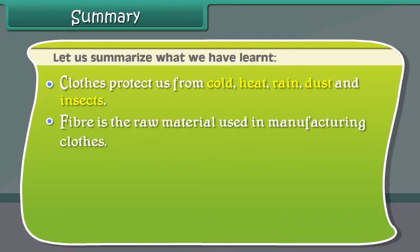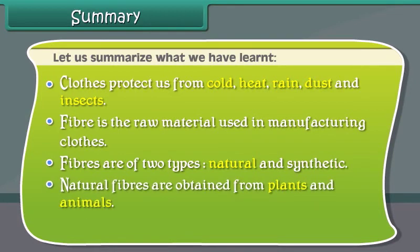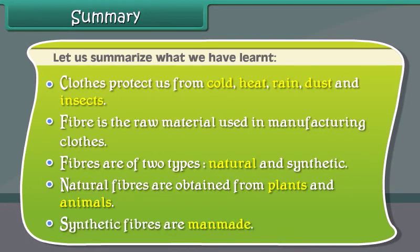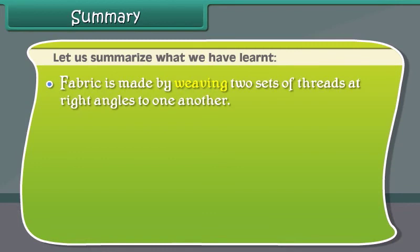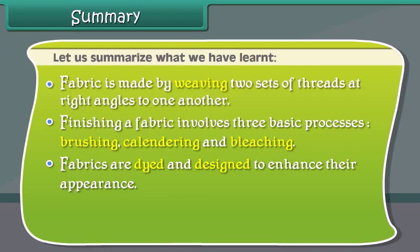To summarize: fiber is the raw material used in manufacturing clothes. Fibers are of two types — natural and synthetic. Natural fibers are obtained from plants and animals, while synthetic fibers are man-made. Fabric is made by weaving two sets of threads at right angles to one another. Finishing involves brushing, calendaring, and bleaching. Fabrics are dyed and designed to enhance their appearance, and stitching is the process by which fabrics are converted into clothes.